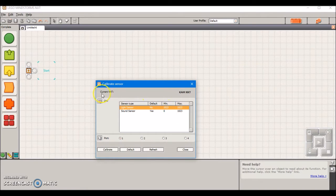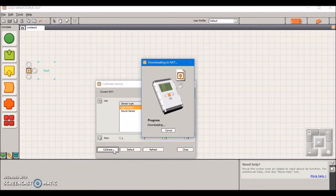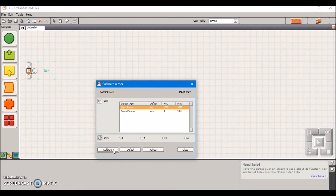In order to calibrate your sensor, all you really need to do is select your sensor, in this case the light sensor, and the port that you're going to calibrate in, which is really not that important, and you're going to click Calibrate. It's going to download the program, and now that the program is downloaded, I can show you how to calibrate it.